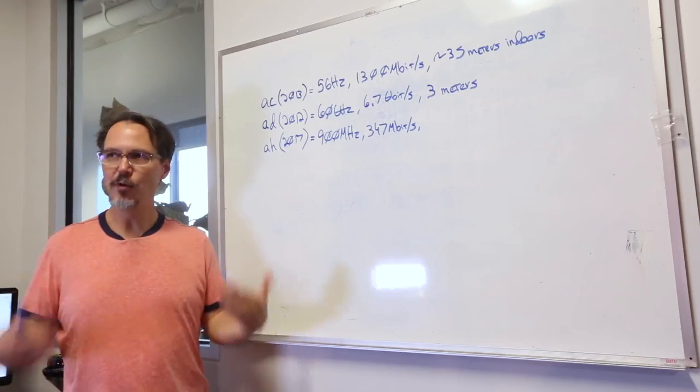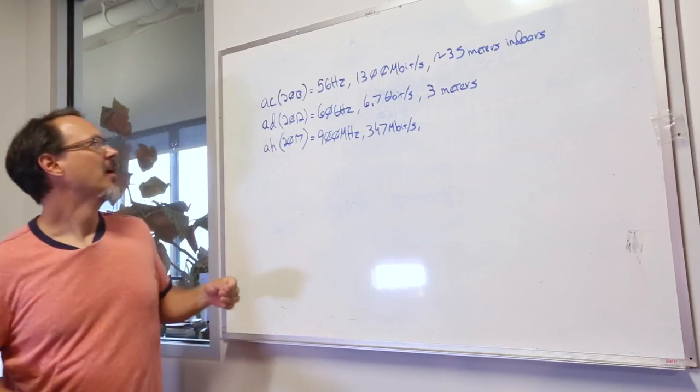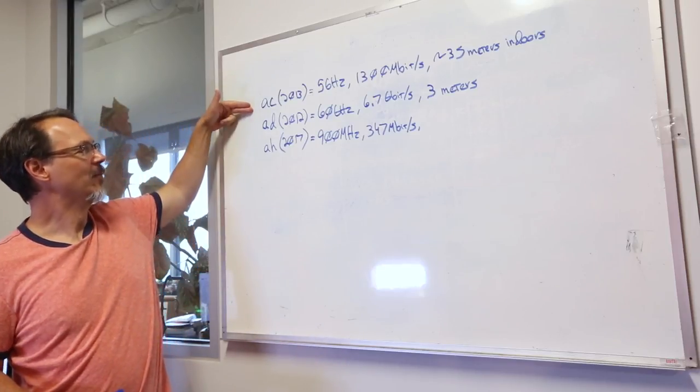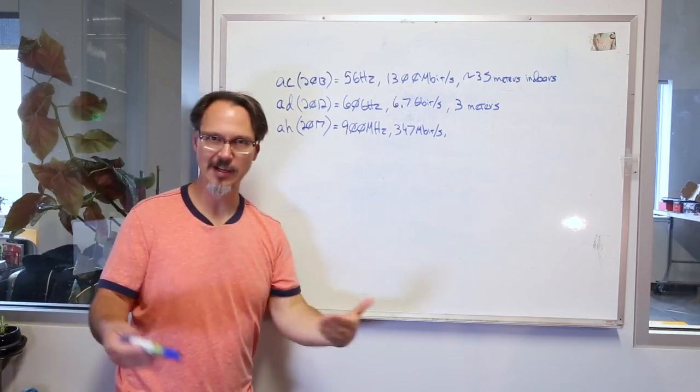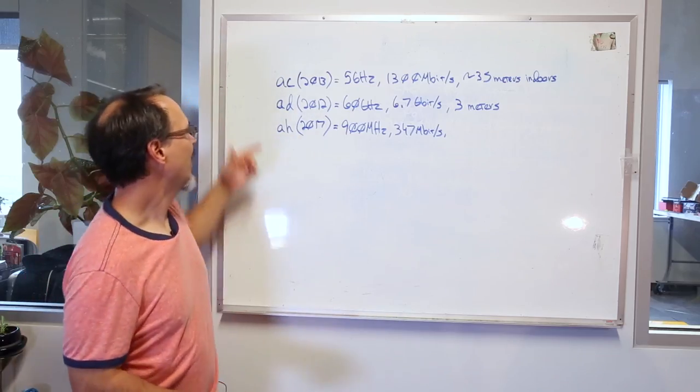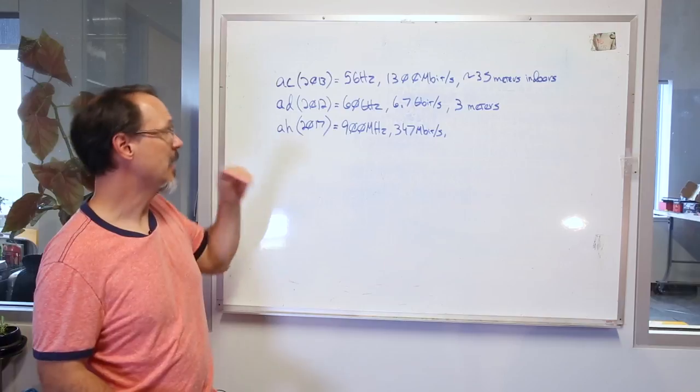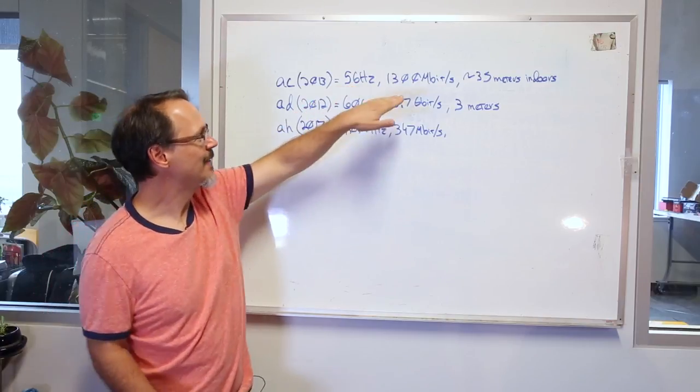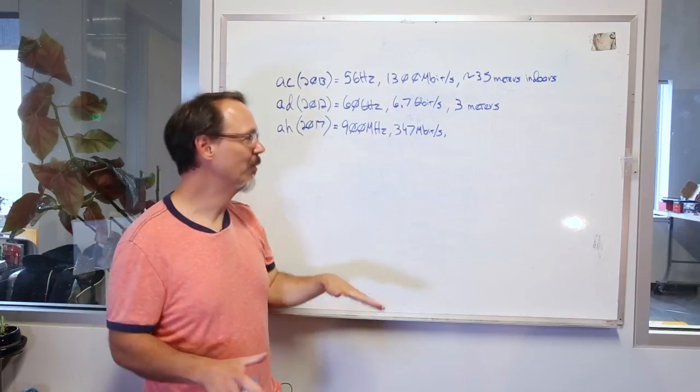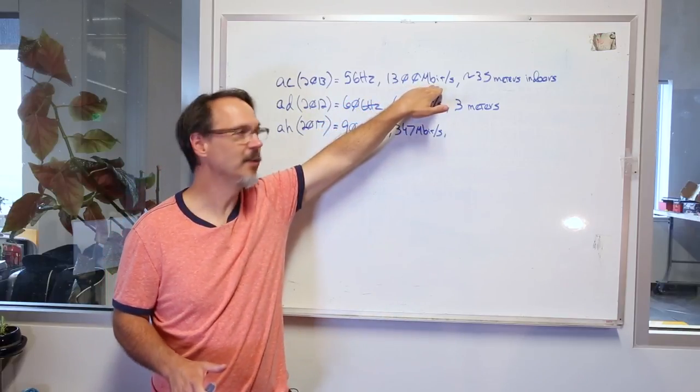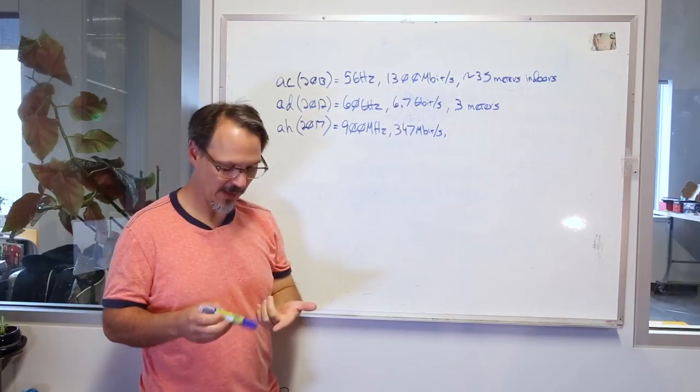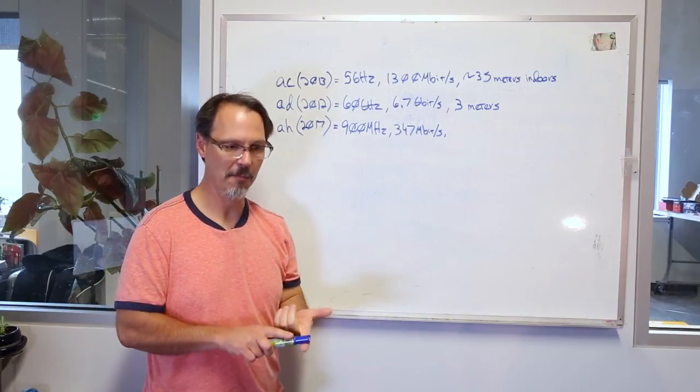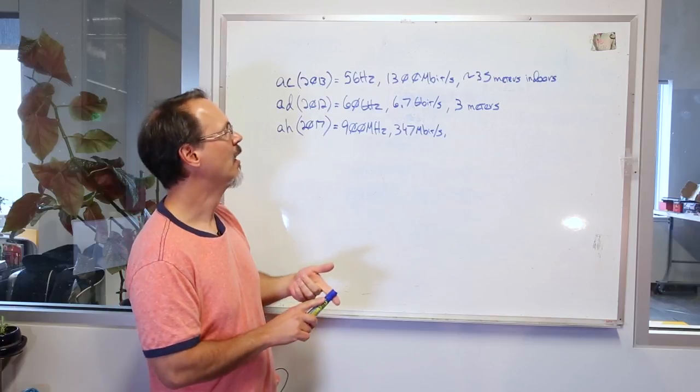So then there are a few more specs that are out in the world but these are kind of different animals. Starting with AC, 802.11 AC, I gotta say the whole thing so everybody understands. AC was adopted in 2013. It operates exclusively in the five gigahertz range. It can get up to 1300 megabit per second. Now remember, AC is sort of like super N in that it runs MIMO OFDM.